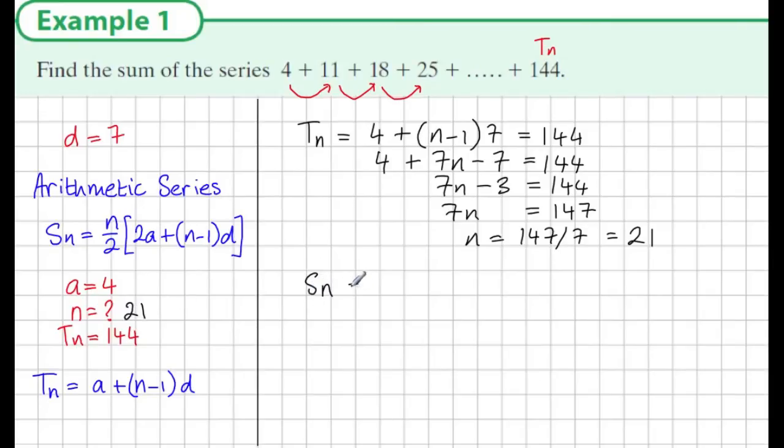So when we're summing this series, we're summing 21 terms. So substituting this into our sum formula, this gives us 21 over 2, 2 times a which is 2 times 4, plus n minus 1 which is 21 minus 1, times d which is 7.